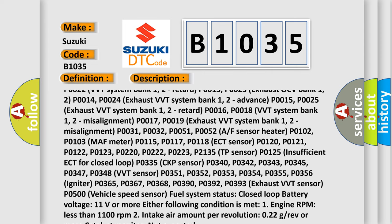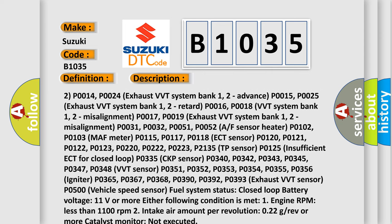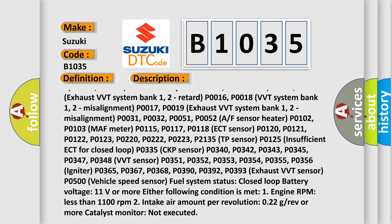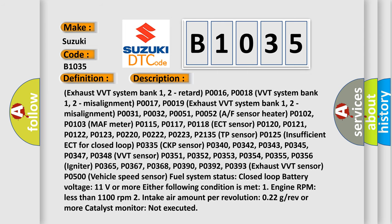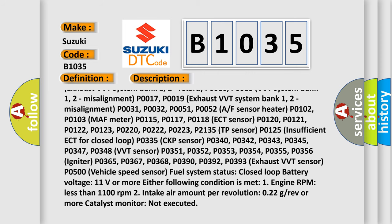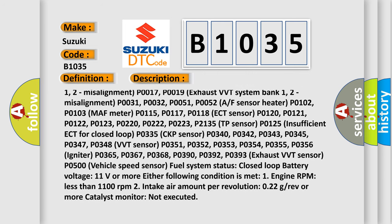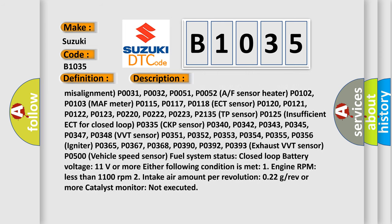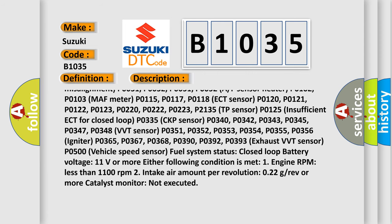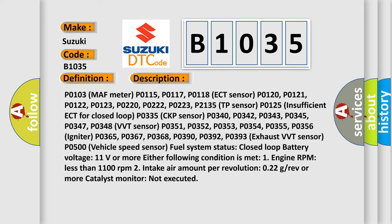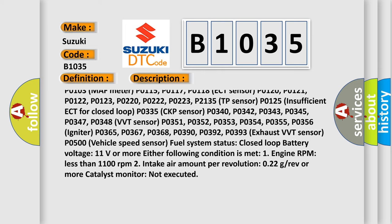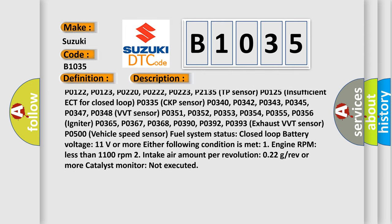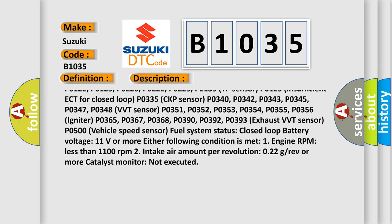Additional prerequisite DTCs not present: P0017 Exhaust VVT System Bank 1 and 2 Misalignment; P0031, P0032, P0051, P0052 AF Sensor Heater; P0102, P0103 MAF sensor; P0180 ECT sensor; P0120, P0121, P0122, P0123, P0220, P0222, P0223, P2135 TP sensor; P0125 insufficient ECT for closed loop; P0335 CKP sensor; P0340, P0342, P0343, P0345, P0347, P0348 VVT sensor; P0351, P0352, P0353, P0354, P0355, P0356 igniter.